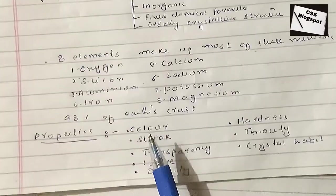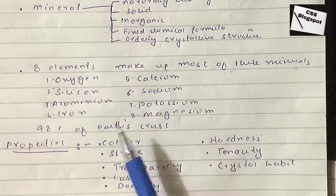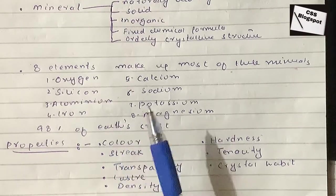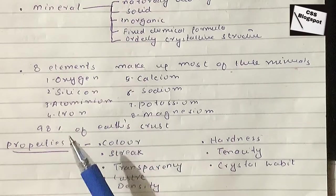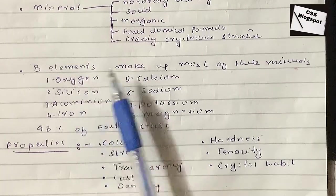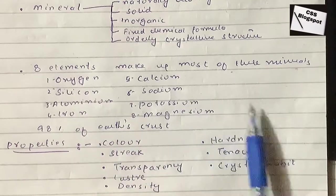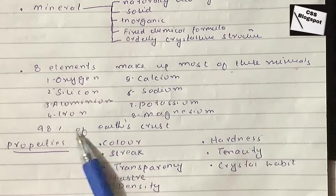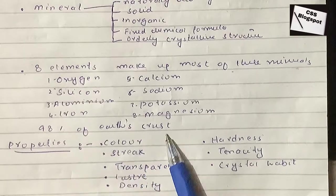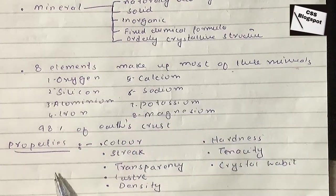We have eight elements that make up most of the minerals. These eight elements compose the majority of minerals: oxygen, silicon, aluminum, iron, calcium, sodium, potassium, and magnesium. 98% of the earth's crust is formed of these eight elements.